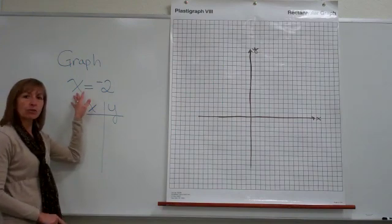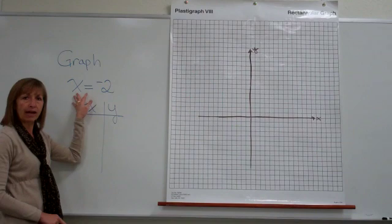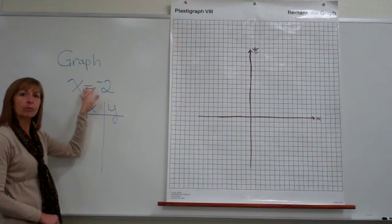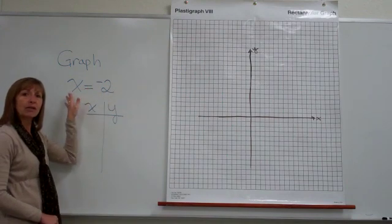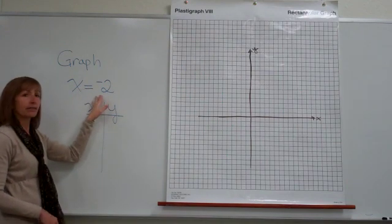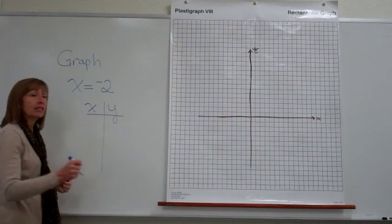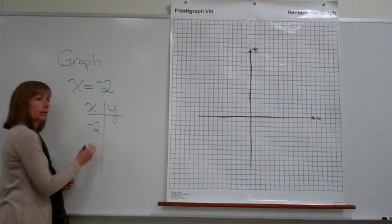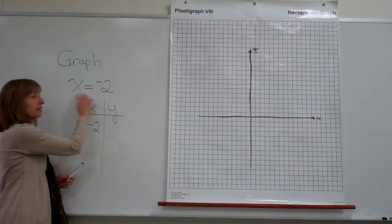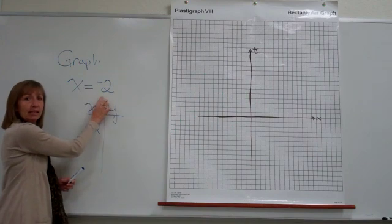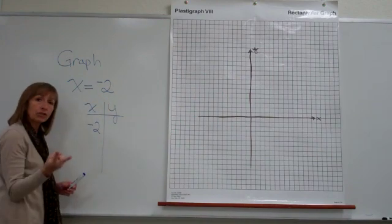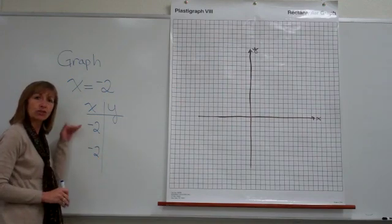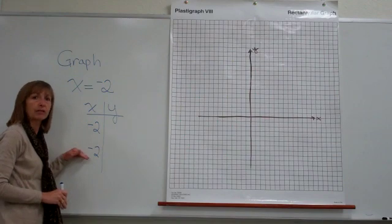When we have just one of the variables in our equation that we're asked to graph, the numerical replacement for that variable must be what the equation designates. So here, x has to be negative 2 because that's what this equation says. In the x column, I must put an x coordinate of negative 2 because the only variable in this equation is x and it says that x equals negative 2. I know I need two points to graph the line, so I'll put a negative 2 value for x in two different places to generate my two ordered pairs.